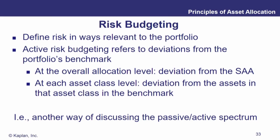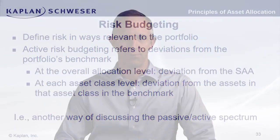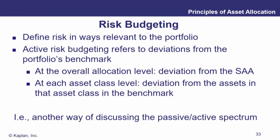How about risk budgeting? The idea here is that we're going to define risk in ways relevant to the portfolio — figure out how we're allocating risk as we allocate weight to our different asset classes. If we're doing active risk budgeting, we're looking at the deviations from the portfolio's benchmark and how much extra risk they add. At the overall allocation level, we're talking about deviations from the strategic asset allocation; at the individual asset class level, deviations from the assets in that asset class in the benchmark.